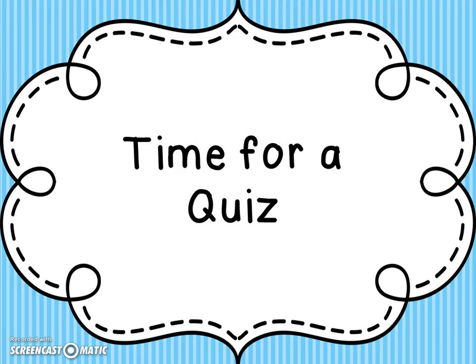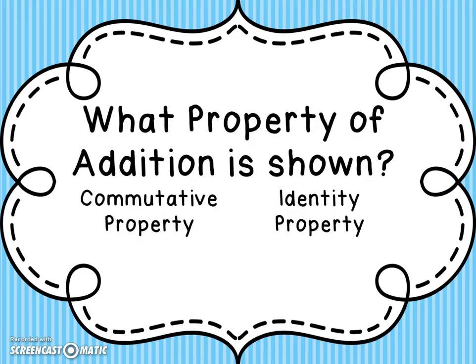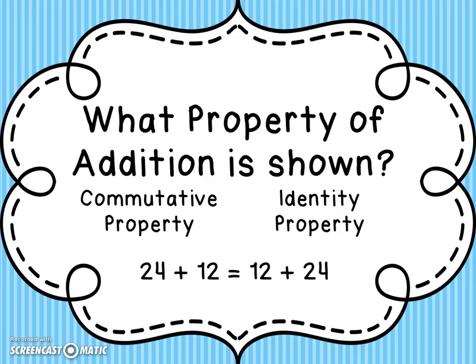Now it's time for a quiz. Tell me what property of addition is being shown — the commutative property, which says we can move the add-ins around and still get the same sum, or the identity property, which says any number plus zero gives us that same number. Here's the problem: 24 plus 12 equals 12 plus 24. Which property is being shown? It is the commutative property.